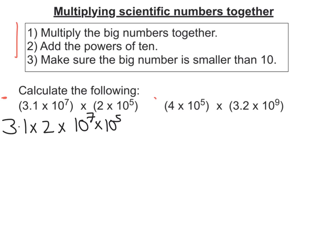So step number 1 says you multiply the big numbers together. Now 3.1 doubled, or 3.1 times 2 is 6.2.